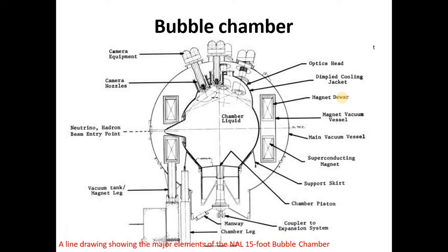You can see the diagrammatic view of bubble chamber. We have a liquid chamber, optic sheets, dimpled cooling jackets, magnetic diver, magnet vacuum vessel, main vacuum vessel, superconducting magnet, support skirt, chamber piston, coupler to expansion system, mainway chamber leg, vacuum tank or magnet leg, neutrino hadron beam entry point. This is the entry point for beam, camera noses, camera equipment for viewing the tracks of the particles. A line drawing showing the major elements of FNAL 15-foot bubble chamber.